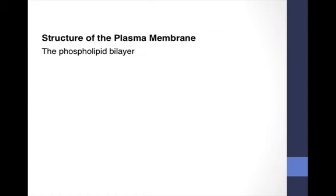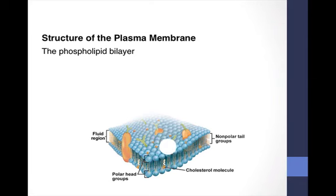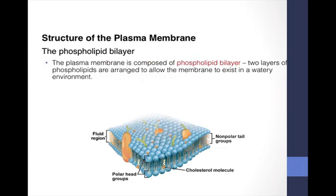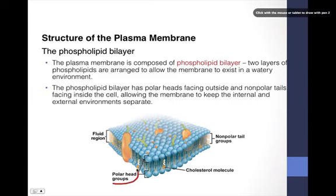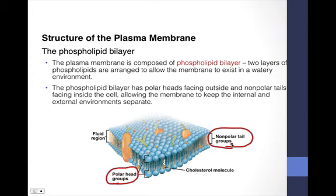Let's check out the structure of the plasma membrane. It is a phospholipid bilayer — phospho meaning phosphate, lipid meaning fat, bi meaning two. You will notice that it has a polar head and nonpolar tails. The polar heads face outside and the nonpolar tails face inside the cell, allowing the membrane to keep the internal and external environments separate.